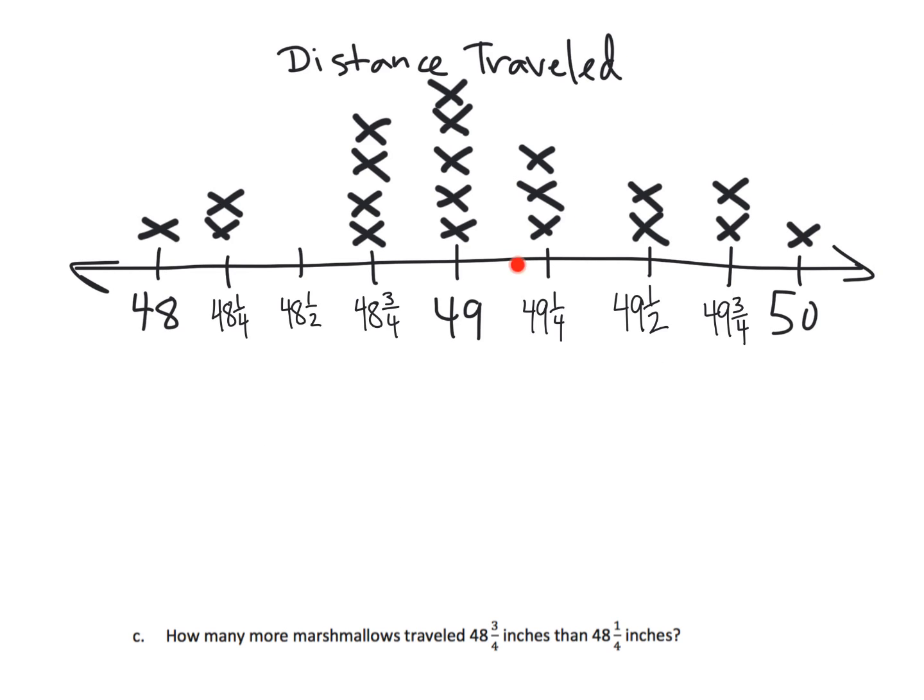So now we've got our line plot here, and we've been given a series of questions to answer. So first question: explain the steps you took to create the line plot. What did we do? We looked at the table. The table of data told us the minimum and the maximum. We cut in all of the lines every quarter, and then we started to put in our X's. All right, so that's pretty straightforward.